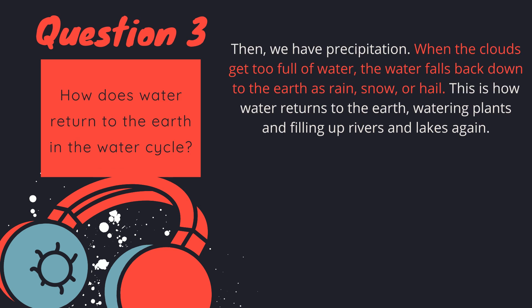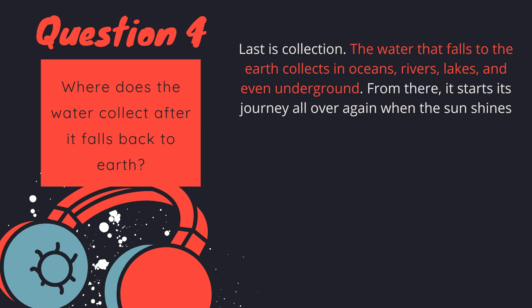Question number three: How does water return to the Earth in the water cycle? C. Water returns to the Earth as rain, snow, or hail through precipitation. This happens when clouds get too full of water. Question number four: Where does the water collect after it falls back to Earth? C. After water falls back to Earth, it collects in oceans, rivers, lakes, and even underground. This ensures there's always water ready to start the cycle again.